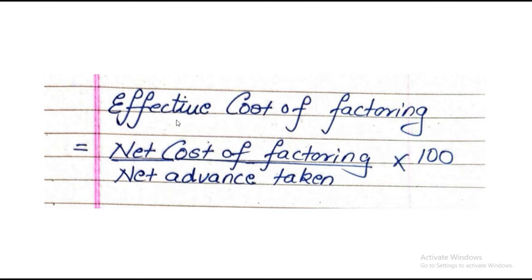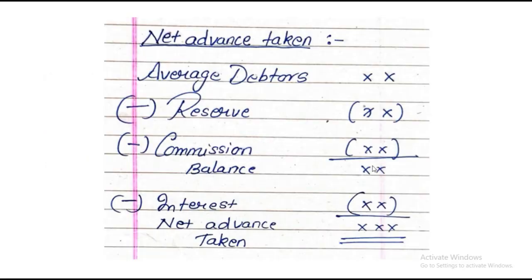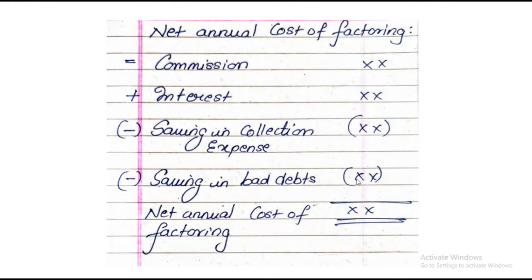The effective cost of factoring was already discussed in the previous video. The formula for effective cost of factoring is net cost of factoring upon net advance taken, into 100. Net advance taken is average debtors less reserve less commission less interest. Net cost of factoring is commission plus interest less savings. Similar formulas remain the same, but the approach is a little different.